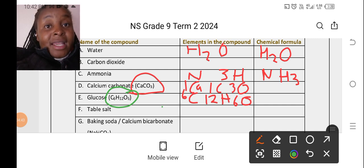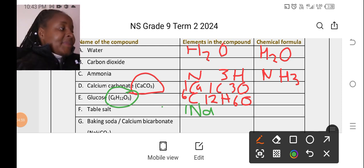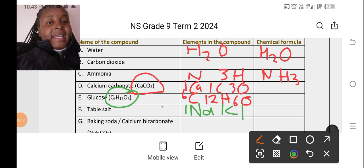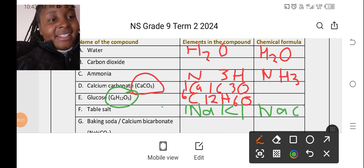Table salt. Our table salt is sodium chloride. So table salt is made of one sodium and one chlorine. The formula for chlorine is Cl, right? So one sodium, one chlorine. The formula for sodium chloride is NaCl.